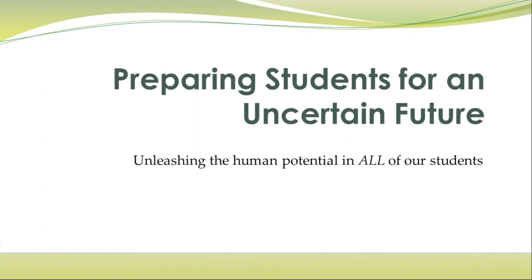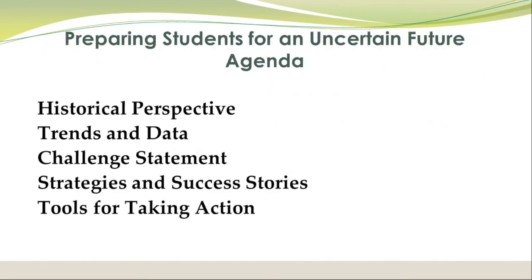As Julie said, I'm a former superintendent with a 27-year career in education. The area that always excited me most and that I was most passionate about was equity and access for all of our students. Today's conversation is about preparing our students for a very uncertain future, but also how do we identify, reach, and engage all of our students — and ultimately unleash the human potential in our students so that they can not only survive, but thrive. I want to go through five segments or chapters: a brief historical perspective on American public education, some future trends and current data, a challenge statement, success strategies and success stories, and then tools for taking action.